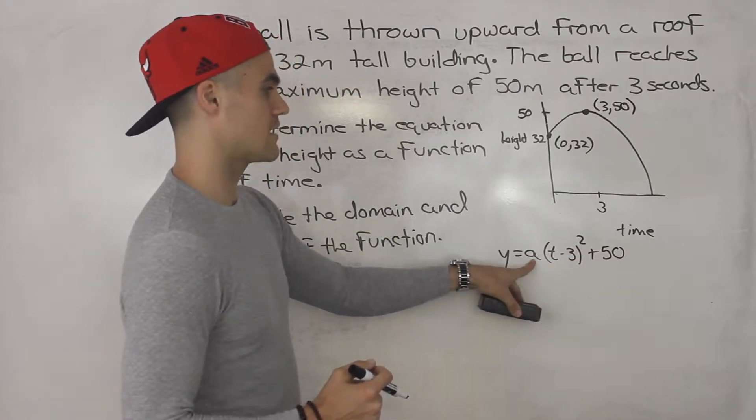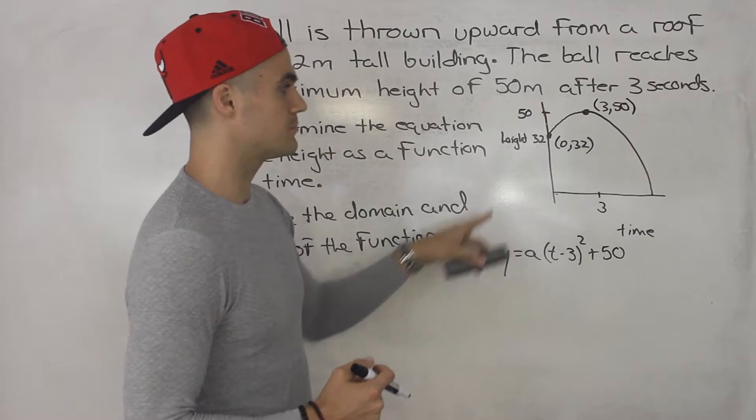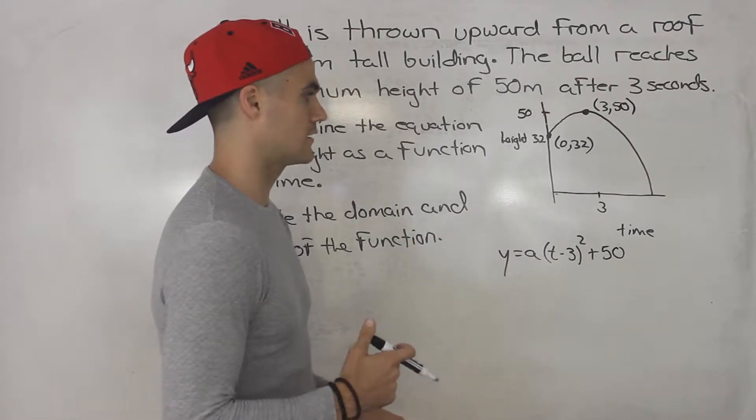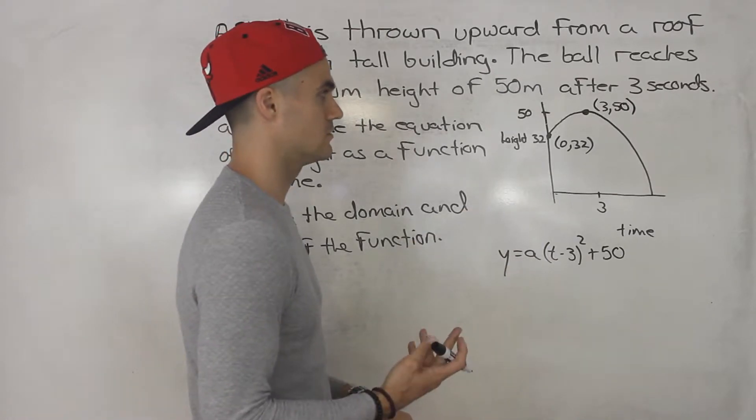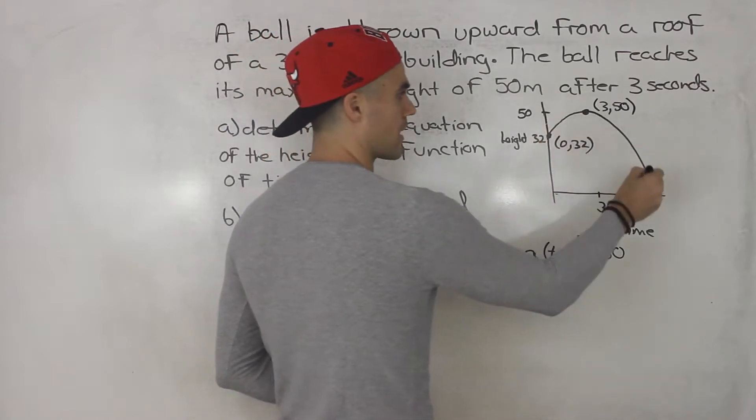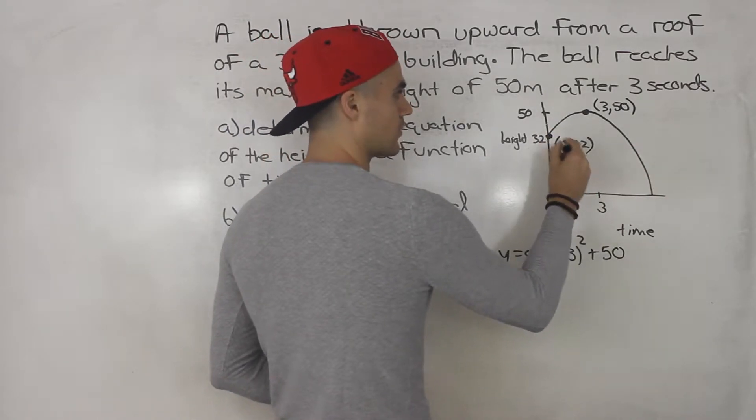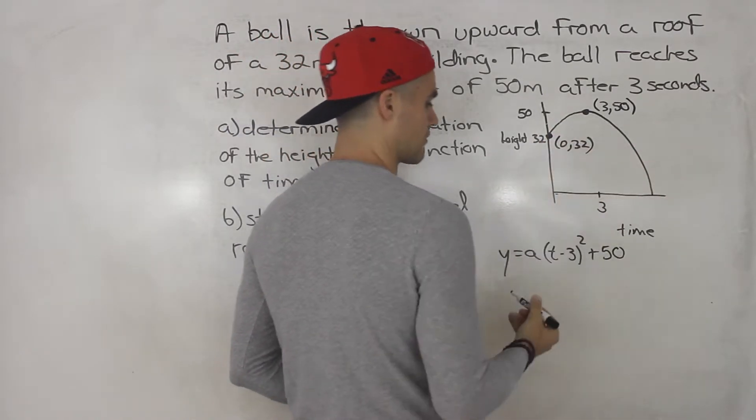Now, how can we solve for this a value? Well, we would have to plug in some kind of value, some kind of point on this parabola. And notice we're given this point here, 0 and 32.